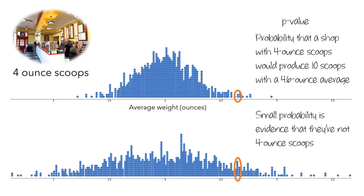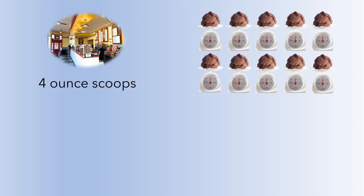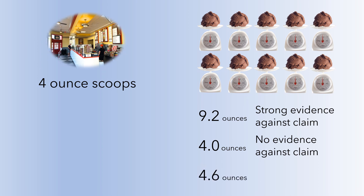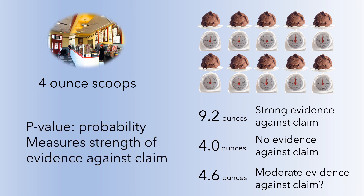Let's summarize the reasoning we've seen here. We had an ice cream shop that claimed to serve four-ounce scoops, and you weighed 10 scoops. If you got an average of 9.2 ounces, this seems like strong evidence against the claim. If you got an average of 4.0 ounces, that would be no evidence against the claim. And 4.6 ounces might be moderate evidence against the claim. We can formalize this strength of evidence with the p-value, which is a probability that measures the strength of evidence against the claim. And this overall reasoning is central to making statistical inferences.